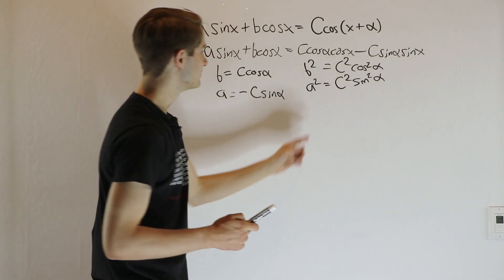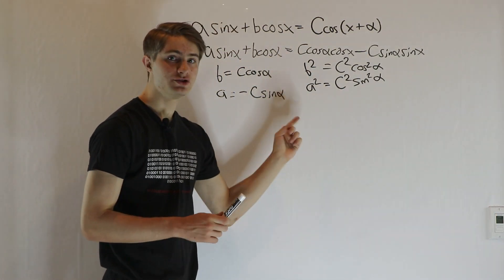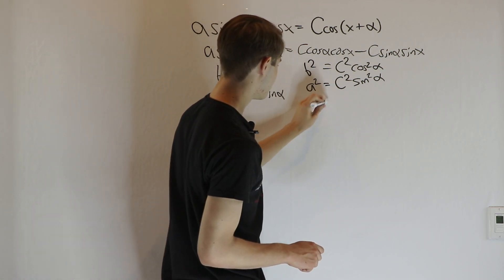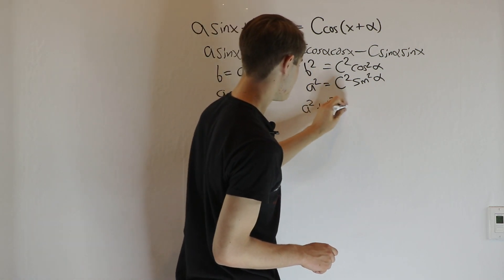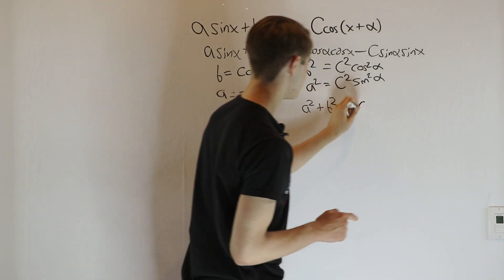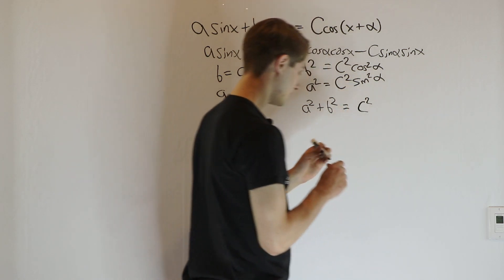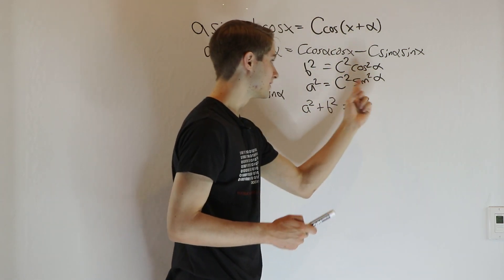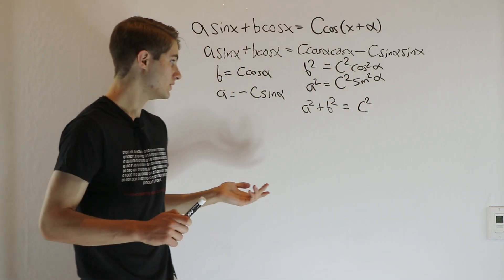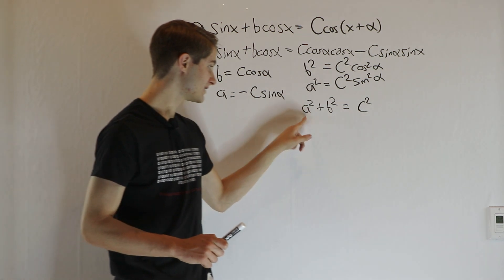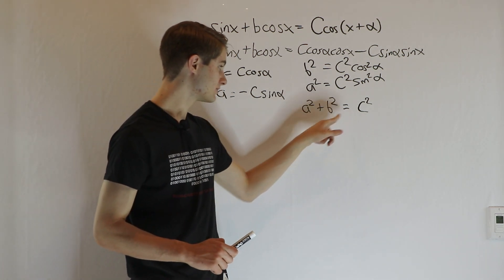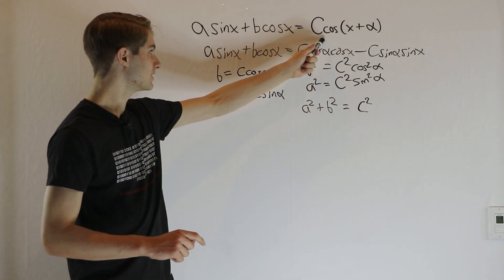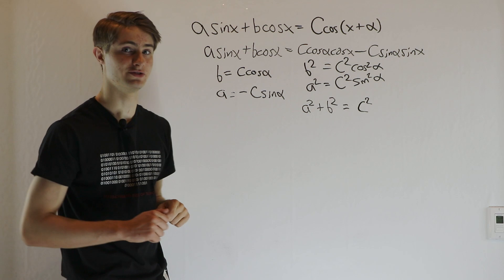What happens if we add these two equations together? We get a squared plus b squared equals c squared times cosine squared alpha plus sine squared alpha, which is just one. So in fact, a squared plus b squared equals c squared, and we can use that to solve for c.